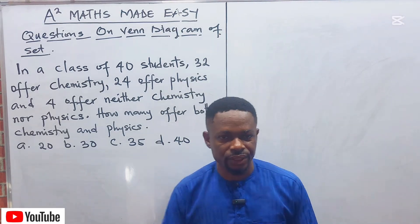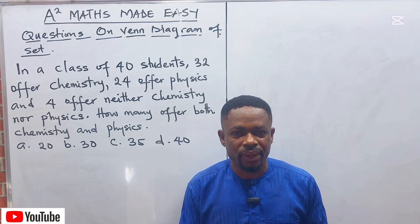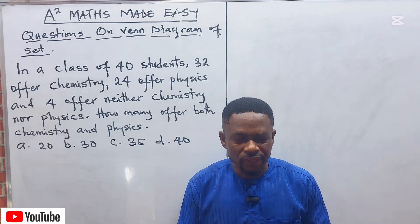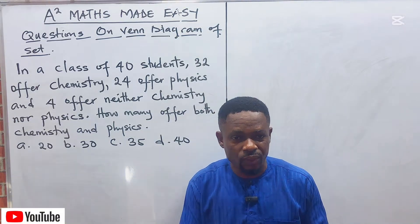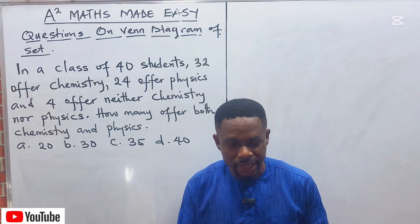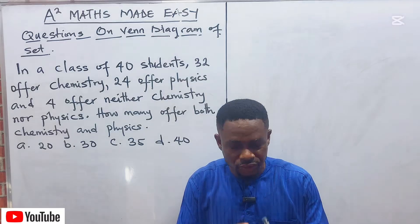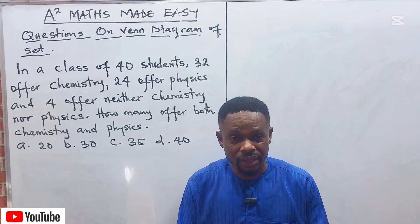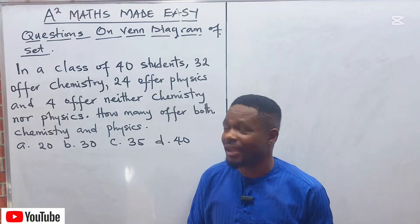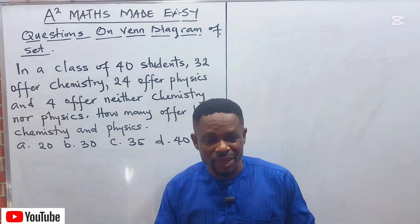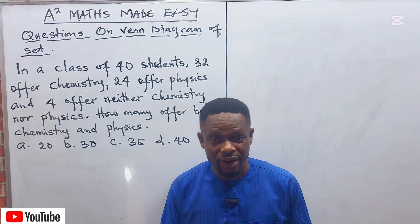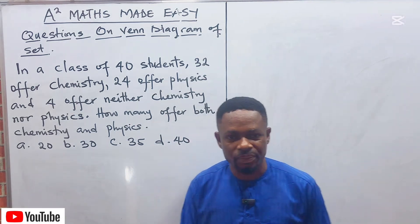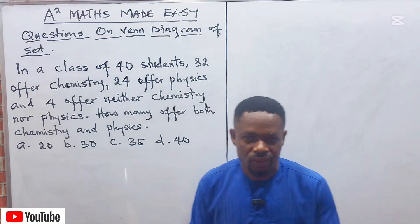We are continuing with the second question. We are still talking about how to find both in a Venn diagram, but the only difference with this second question is the word 'neither nor.' Let's see how to solve it in less than a second and the answer will appear. This is A-Square Math Made Easy. Make sure you share, subscribe, and comment. Let's solve this problem.